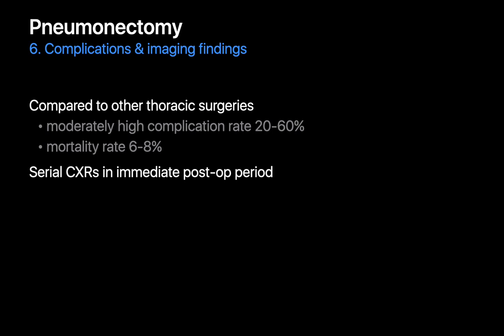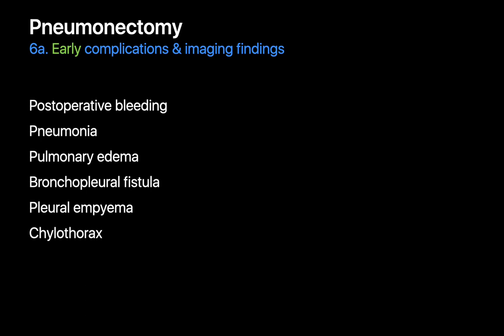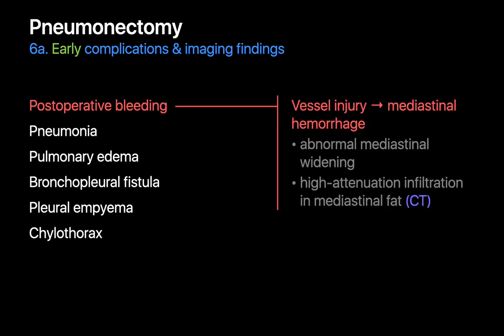Compared to other thoracic surgeries, complication rates following a pneumonectomy are higher, and frequent serial chest x-ray imaging is common in the immediate post-op period. Mortality rates after pneumonectomy may be around 5% or slightly above. Early complications include post-op bleeding in the mediastinum from vessel injury during surgery; we suspect this if we see abnormal mediastinal widening on post-op chest x-rays. On chest CT, mediastinal bleeding may manifest as high-attenuation material or fluid infiltrating the mediastinal fat.